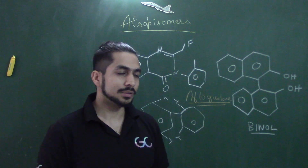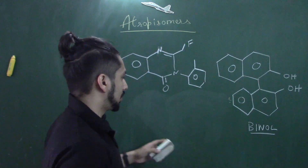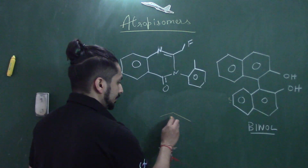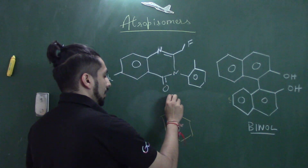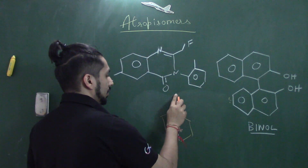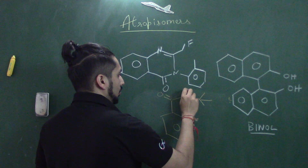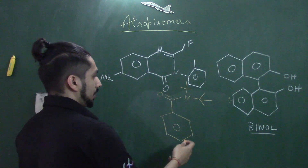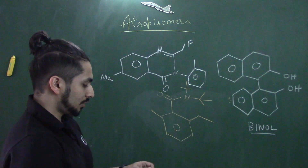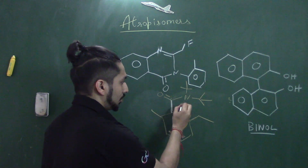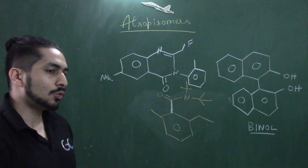One of the very classical examples I want to discuss is this molecule — let me draw the structure. This is a phenylalanine-type structure, and over here we have a carbonate bond attached to nitrogen, with methyl substituents on both sides. In this case, this bond will be hindered because of the bulky groups and the ethyl groups on either side. So again, this molecule also exists as atropisomers.